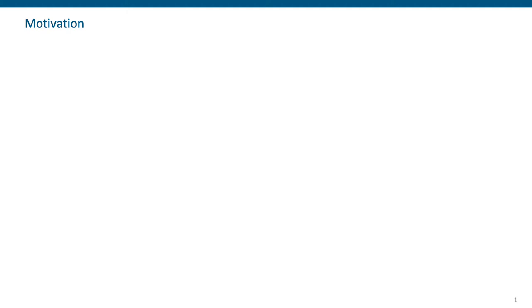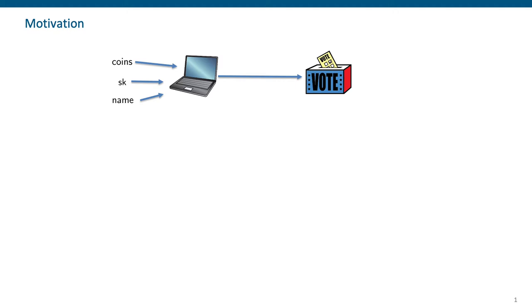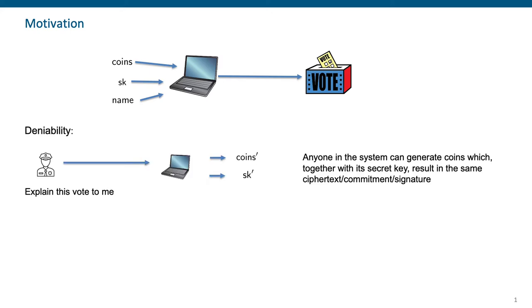Let's talk about the motivation behind our work. The easiest way to discuss the motivation is by showing the e-voting example. In an e-voting system, we have a system that counts votes and the user uses his personal PC with some random coins on it, potentially some secret key for some signing algorithm and the name of the person that he wants to vote on. At some point after the vote gets counted, there might be a state adversary that comes to the user and asks him to explain the vote.